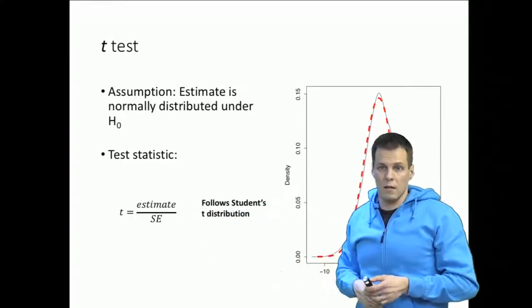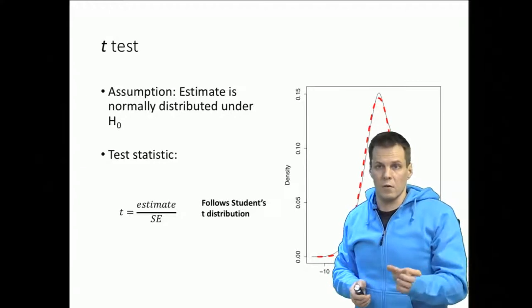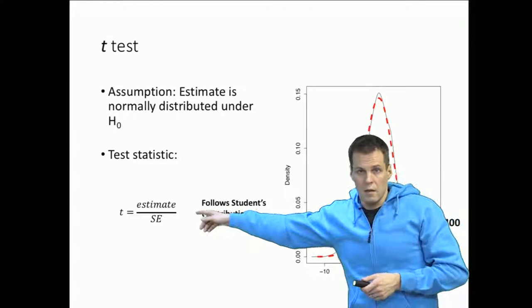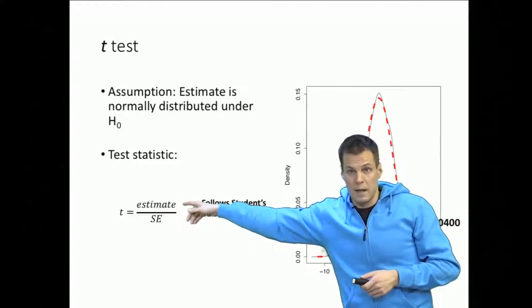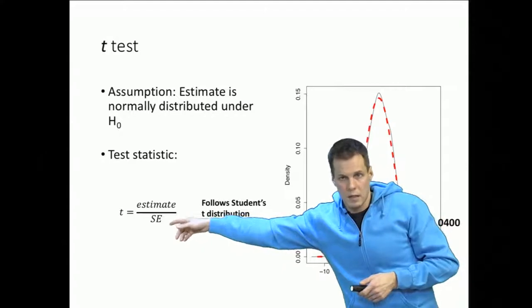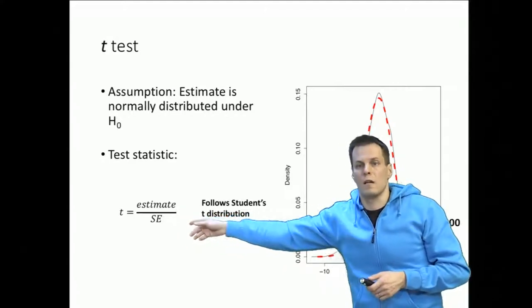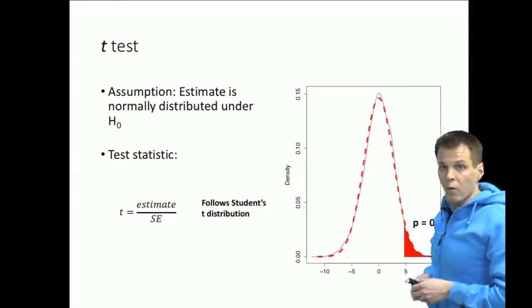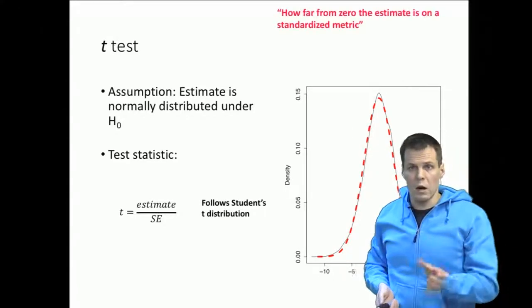So remember our standardizing something is subtracting the mean first and then dividing by the standard deviation. So the mean here is the null hypothesis value so subtracting zero doesn't do anything and then we divide by the standard error which is the estimate of the standard deviation of this estimate when we actually do the study over and over many times. So that's the logic.